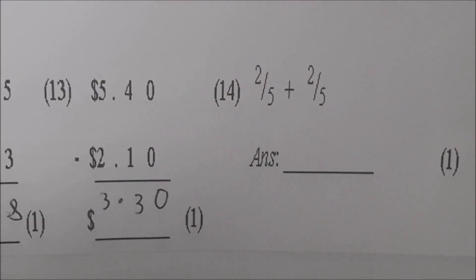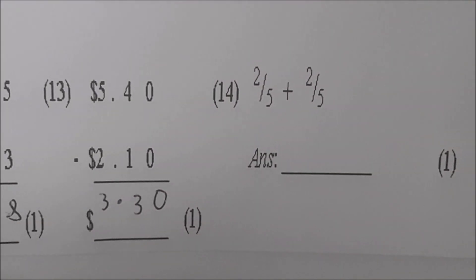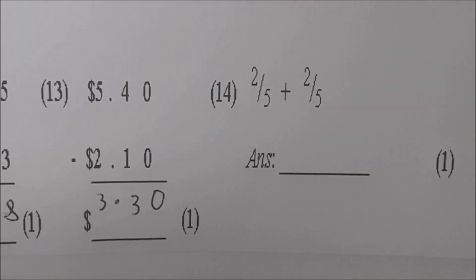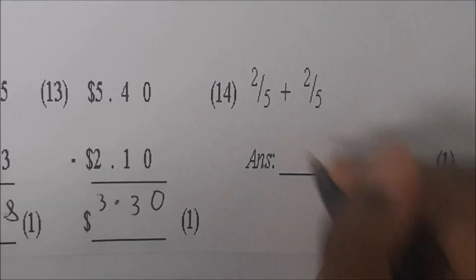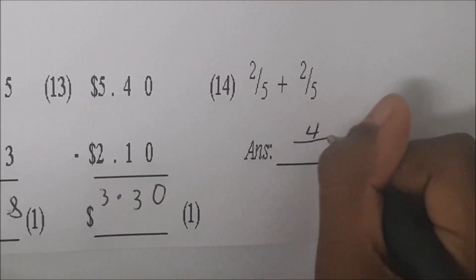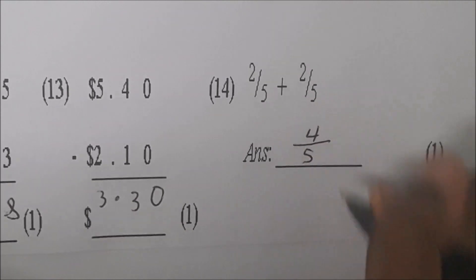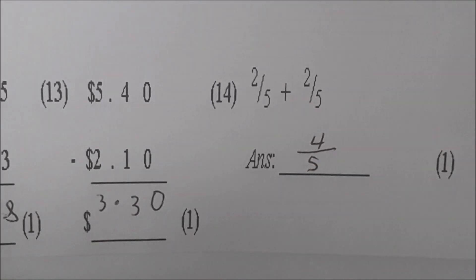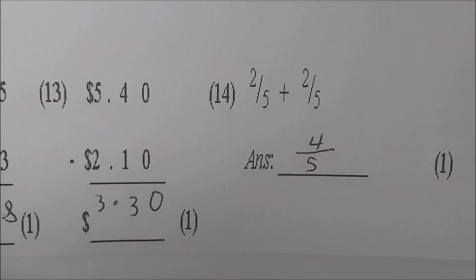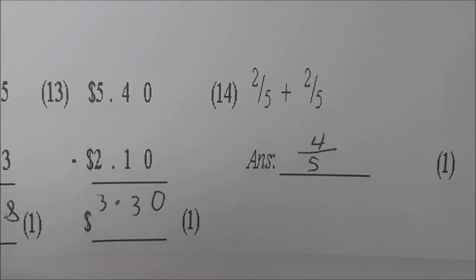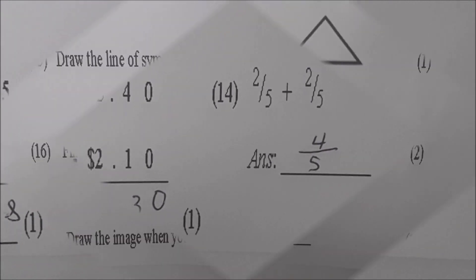Now we're doing the fraction. Two over five plus two over five. What do you get when you add two over five and two over five? Four over five. Very good. You add two plus two is four and keep the five — they're like fractions. So the answer is four over five, because you're adding fifths.